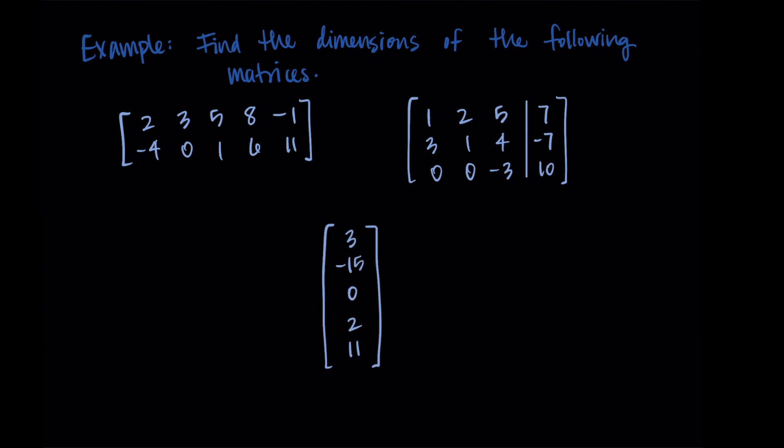So if we look at this first matrix, we want to know the number of rows by the number of columns. So I see that we have one, two rows, and then we have one, two, three, four, five columns. So the dimensions of this matrix are two by five.